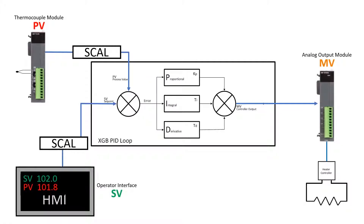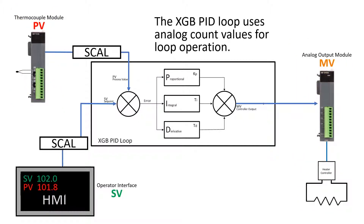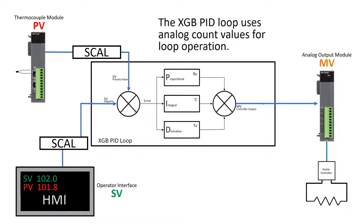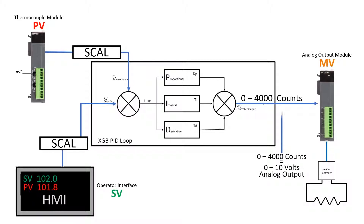Our demonstration oven uses a thermocouple module and an analog output module. The XGB PID loops use analog count values for loop operation. The result of the PID calculation is output as an analog count to the MV. This control system uses an analog output configured for a range of 0 to 4000 counts, outputting 0 to 10 volts. This output voltage operates the heater controller from 0 to 100 percent.